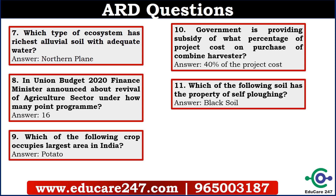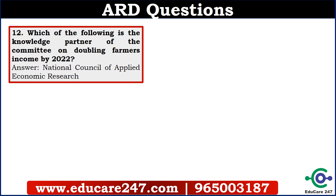The eleventh question is: which of the following soil has the property of self-plowing? The answer is black soil. The twelfth question is: which of the following is the knowledge partner of the committee on doubling farmer income by 2020? The answer is the National Council of Applied Economic Research.